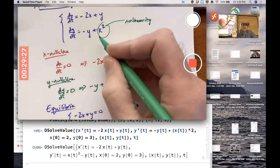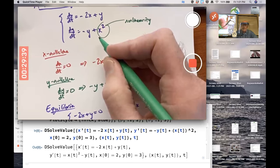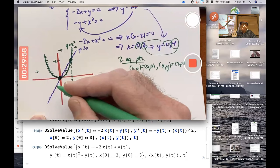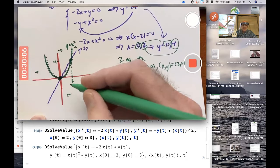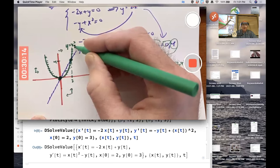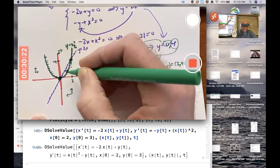dx/dt is negative 2x plus y. That's going to be positive when y is bigger than 2x. dx/dt is positive when you're above the purple line, so solutions move rightward above the purple line. dy/dt is negative y plus x squared. That's going to be positive when x squared is bigger than y, when y is less than x squared, when you're below the green parabola. That's where dy/dt is positive, so it's upward here, upward here, upward here. And downward when you're above the green graph.